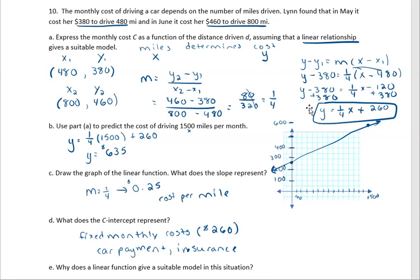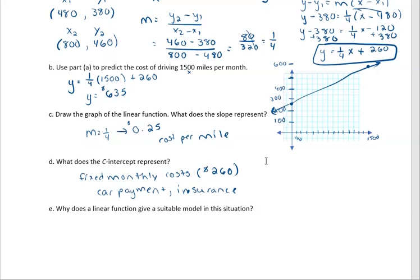So then in part E, why does a linear function give a suitable model for this situation? It gives a suitable model because you have that fixed cost and you have that cost that increases as you drive. As you drive, your gas will be more expensive, you may have wear and tear maintenance, you'll have tires, things like that. So a linear function is a suitable model here because you have fixed cost and variable cost. It takes into consideration the fixed cost that you'll have, and also it takes into consideration the variable cost that you'll have based on the number of miles that you drive.